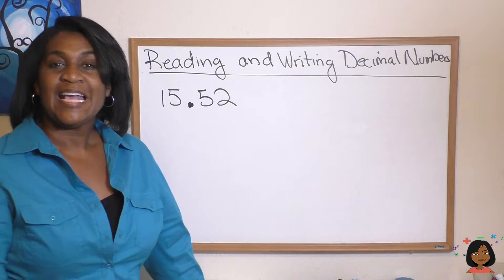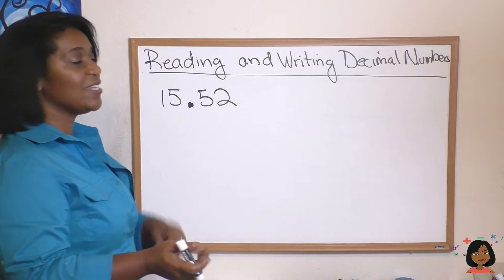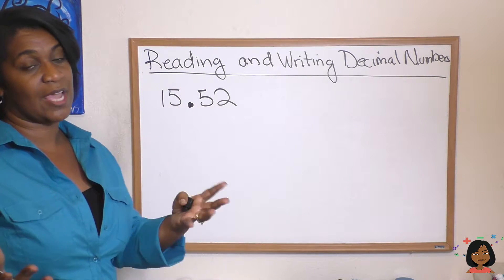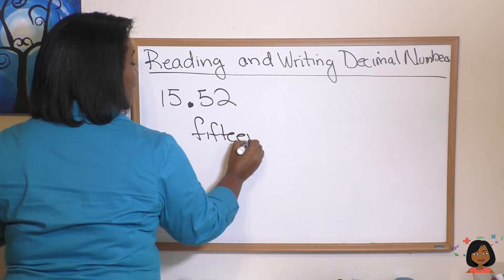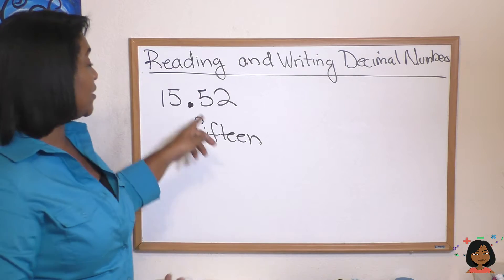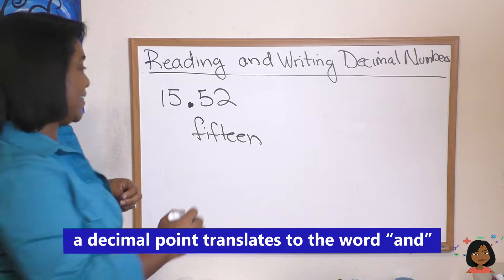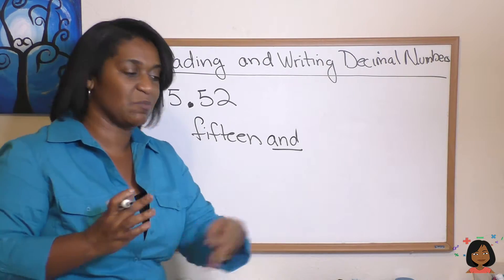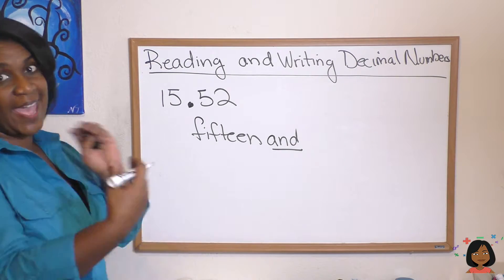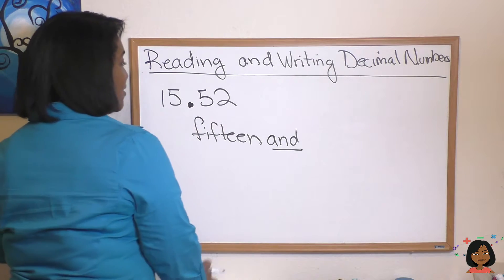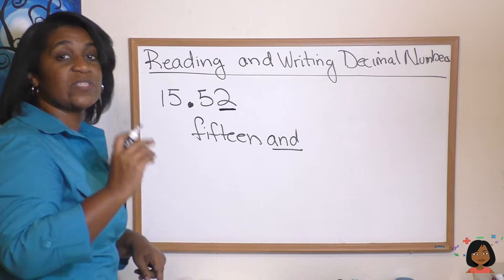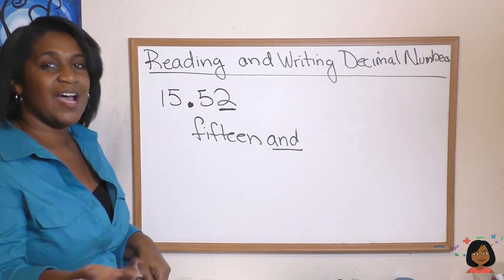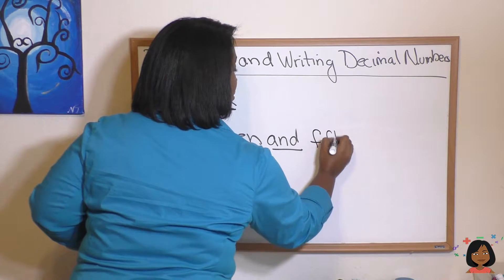Now let's look at the writing part of decimals. I have a decimal here, and if I asked you to write it using words, here's what we'd do. The 15 is just a normal 15, so we write that. Then we've gotten to a decimal — in math, whenever we see a decimal, that translates in writing to the word 'and.' So we have fifteen and... now we go out to the last digit to see its place value. Our two is in the hundredths place, so we're going to read 52 hundredths.